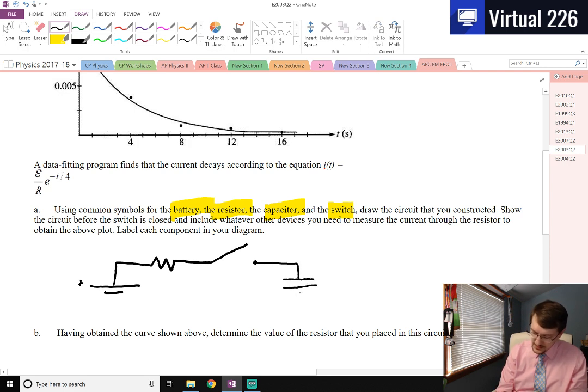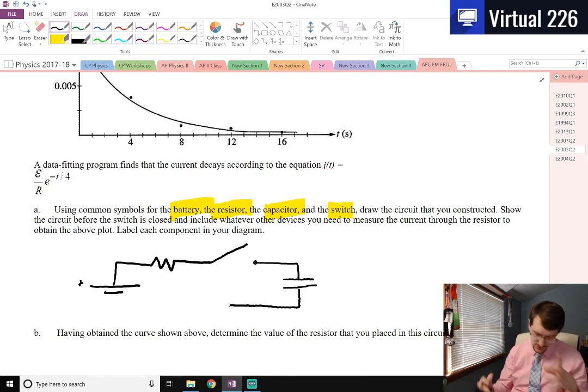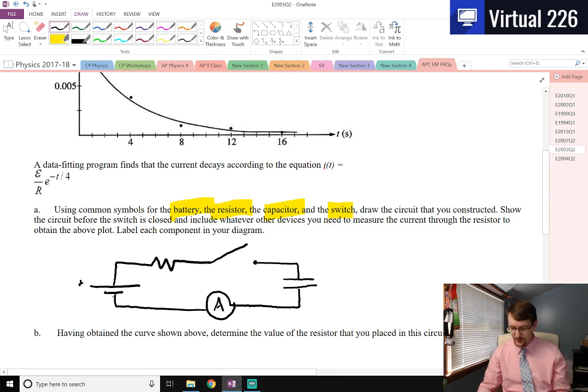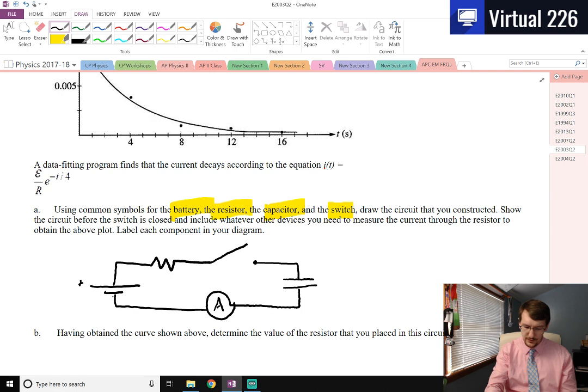If we want to measure a current through this system, we know the current through a series circuit is the same everywhere, but that current needs to be measured in line. It needs to be measured in the series. So we actually need to throw our amp meter just in there somewhere. It doesn't matter where. So this circuit is showing indeed before the switch is closed because it's open right there.